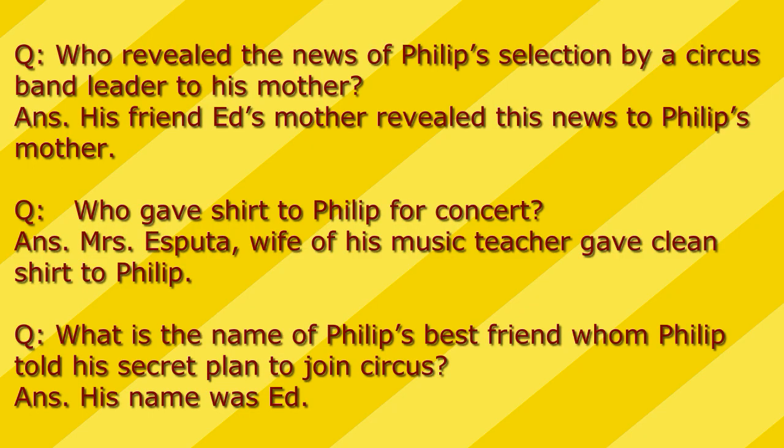Next question: Who revealed the news of Philip's selection by a circus band leader to his mother? The answer is his friend's mother — his friend's mother revealed this news to Philip's mother. Who gave the shirt to Philip for the concert? Mrs. Asputa, the wife of his music teacher, gave a clean white shirt to Philip.